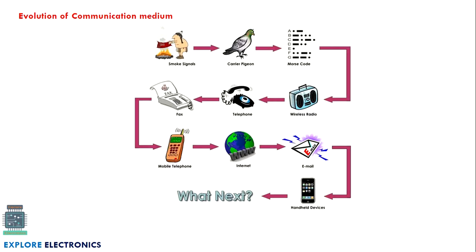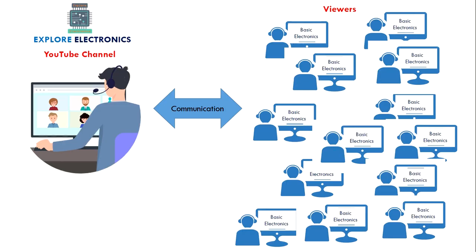There are different methods used by ancient people, and nowadays we use wired and wireless communication. Starting with smoke signals to indicate information to a far-distance person, then carrier pigeons carrying information, then coding methodologies, wireless radio, telephone, fax, mobile phone, internet, email, and now smartphones, computers, and laptops. Nowadays we have multimedia access, and many people can access a single piece of information through a connected network. This is how communication has evolved.